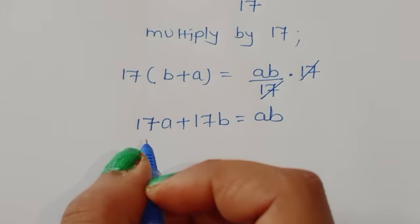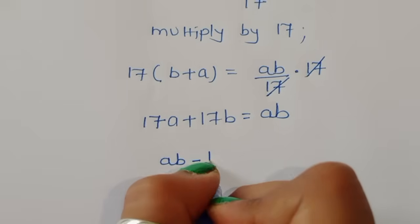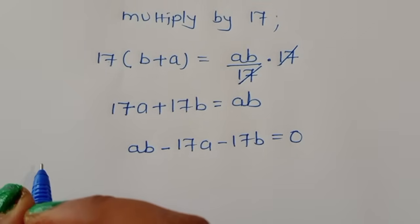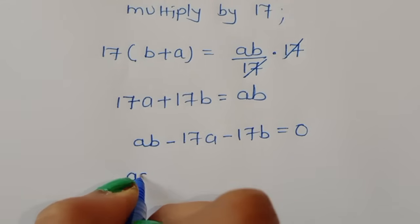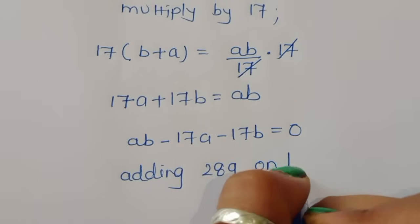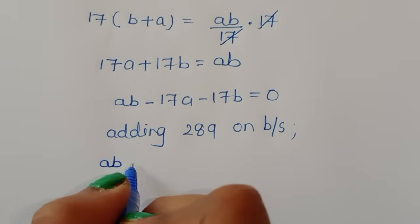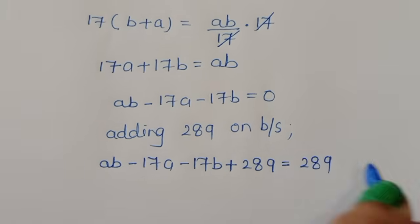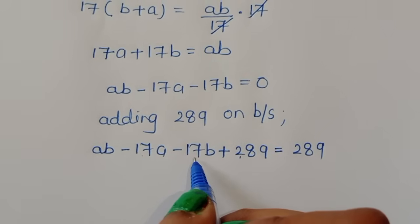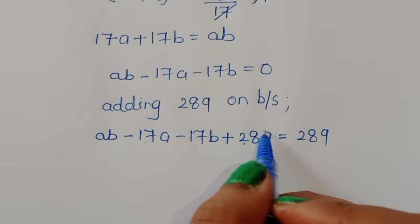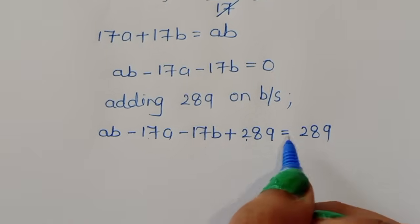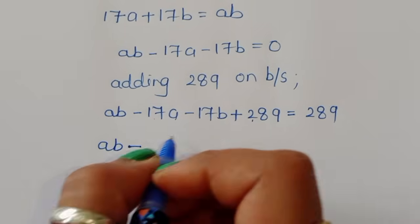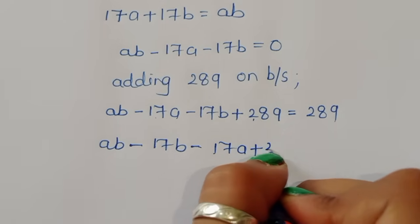Rearranging: ab - 17a - 17b = 0. Now we add 289 to both sides: ab - 17a - 17b + 289 = 289. We add 289 because 17 × 17 = 289, which allows us to factor the left-hand side.